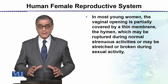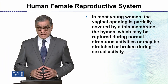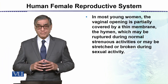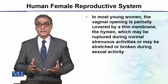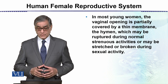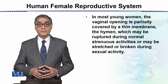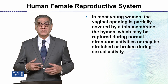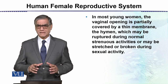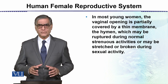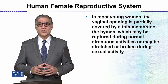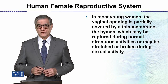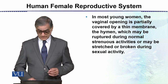In young women, the vaginal opening is partially covered by a membrane called the Hymen, which may be ruptured during strenuous exercise in young females, and is also ruptured at the time of sexual intercourse.